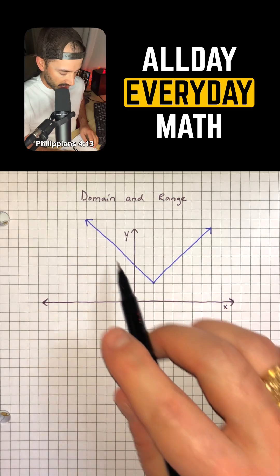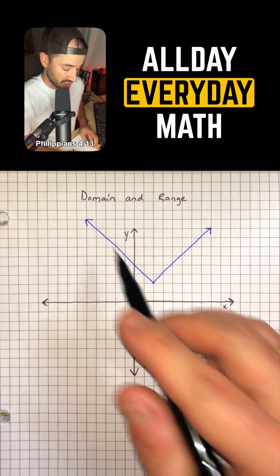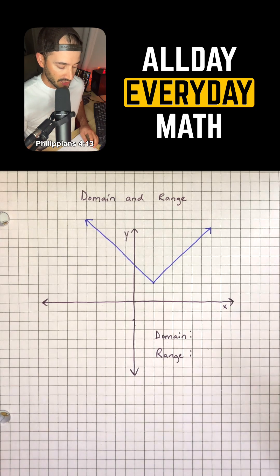So we're given this graph and it looks like an absolute value graph because of that classic V shape and we want to find the domain and range.